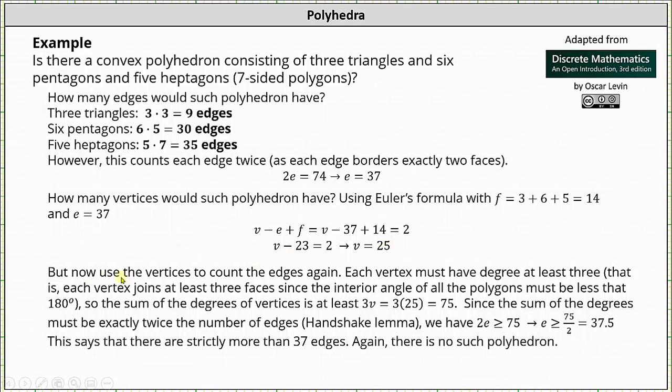But we can't stop now. We now need to use the vertices and count the edges again to see if we really can have 37 edges. Each vertex must have degree at least 3. That is, each vertex joins at least 3 faces since the interior angle of all the polygons must be less than 180 degrees. So the sum of the degrees of the vertices is at least 3 × 25 = 75.